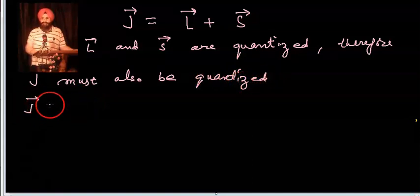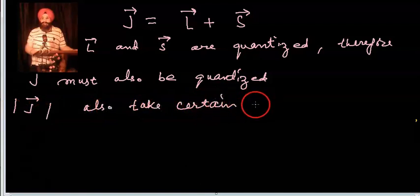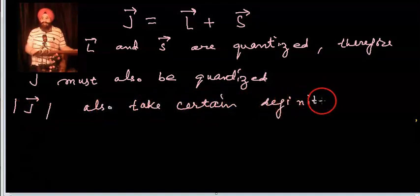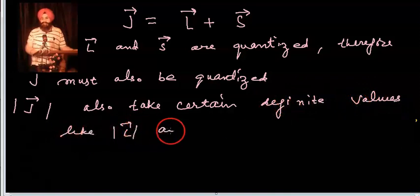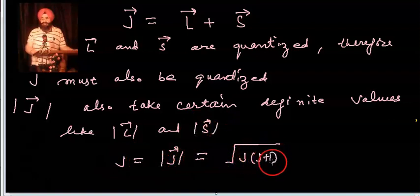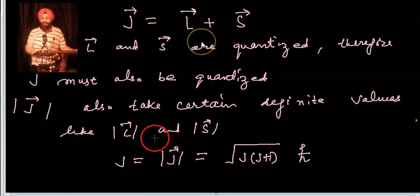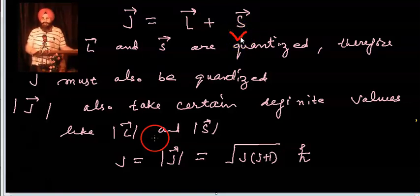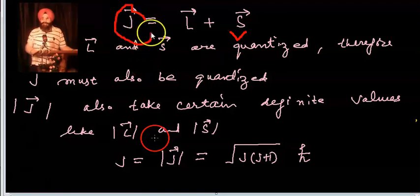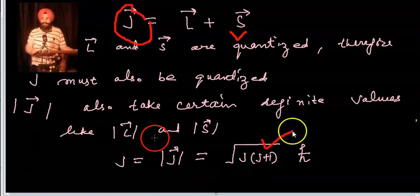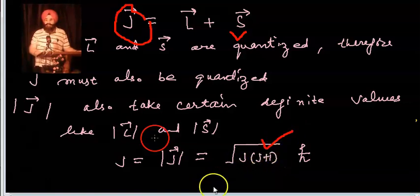Since L vector and S vector are quantized, J vector must also be quantized, having space quantization. The magnitude of J also takes certain definite values. Just as the magnitude of L was √(l(l+1))ℏ and the magnitude of S was √(s(s+1))ℏ, similarly J will follow the same pattern: the magnitude of J is √(j(j+1))ℏ.